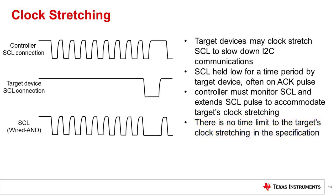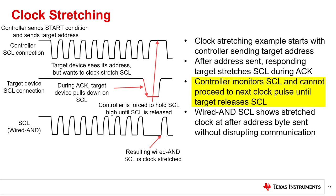According to the I2C specification, there is no time limit to the target holding down SCL for clock stretching. Other similar specifications, like SMBUS, have time limits for how long SCL can be held low. Here's an example of the target device clock stretching SCL. In this example, the controller issues a start and sends the target device address. When the target device recognizes the controller is sending the proper target address, the target device then begins to acknowledge the address. If the target device needs to slow down communications, it can pull down on SCL. This is the only instance the target device can control the SCL.